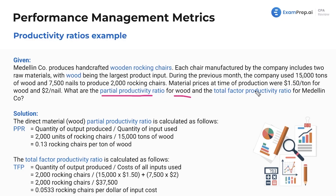So what are the ratios? The partial productivity ratio for wood is calculated by taking all output produced — 2,000 rocking chairs — divided by the quantity of the specific input, which is 15,000 tons of wood. That means we made 0.13 rocking chairs per ton of wood.